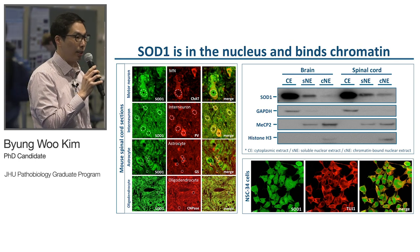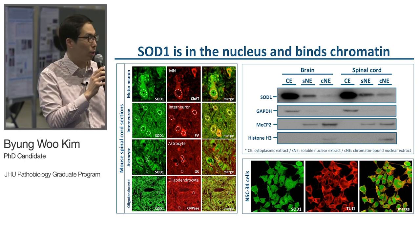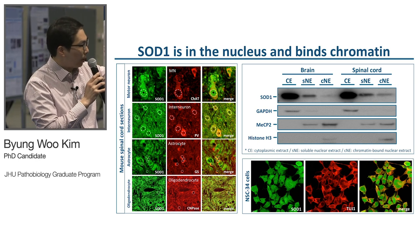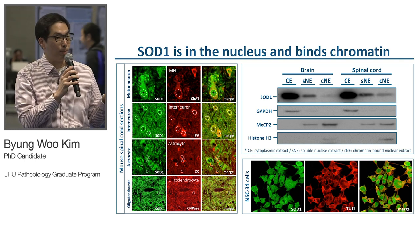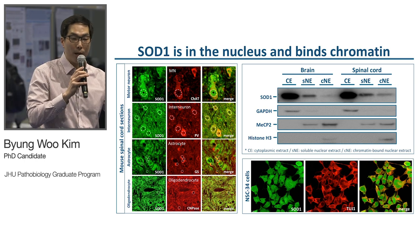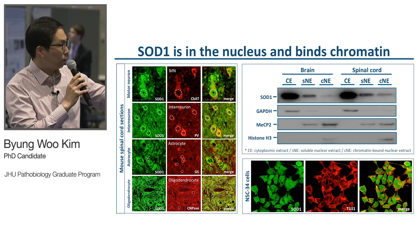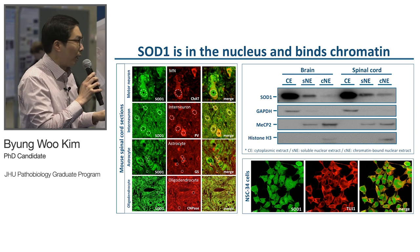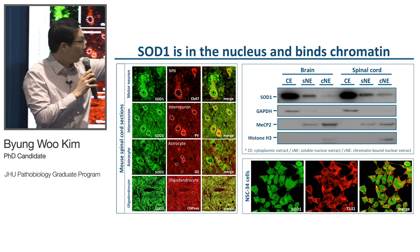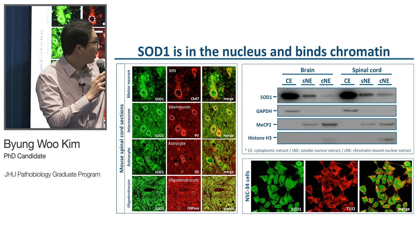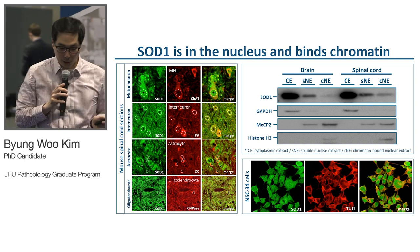That was also confirmed in NSC34 cells. Not only is SOD1 present in the nucleus, but this protein binds chromatin. As you can see in the upper right corner, we did western blotting after subcellular fractionation of brain and spinal cord from mouse. We have three fractions: cytosolic extract, soluble nuclear extract, and chromatin nuclear extract. SOD1 is in the cytosolic extract, also in soluble nuclear extract, and most interestingly in the chromatin-bound nuclear extract in both brain and spinal cord, suggesting that this protein binds chromatin.